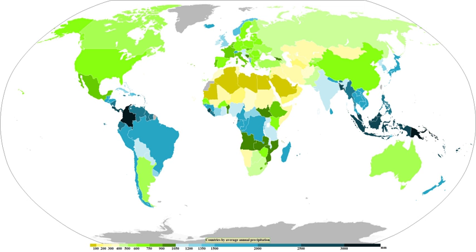For those looking to measure rainfall most inexpensively, a cylindrical can with straight sides will act as a rain gauge if left out in the open, but its accuracy will depend on what ruler is used. When a precipitation measurement is made, various networks exist across the United States where rainfall measurements can be submitted through the Internet, such as CoCoRaHS or Globe. If a network is not available, the nearest local weather office will likely be interested in the measurement.